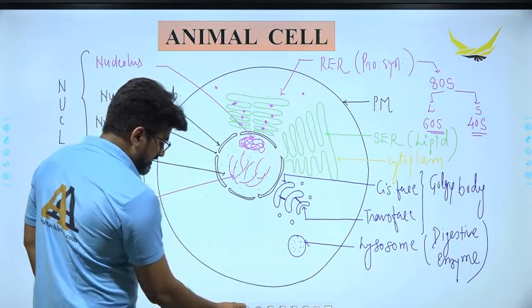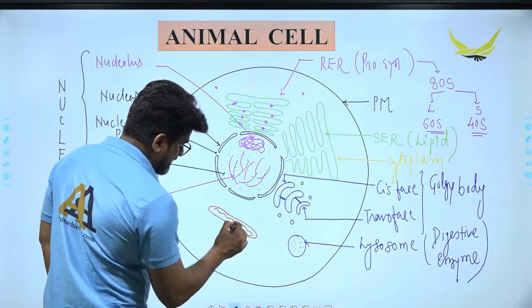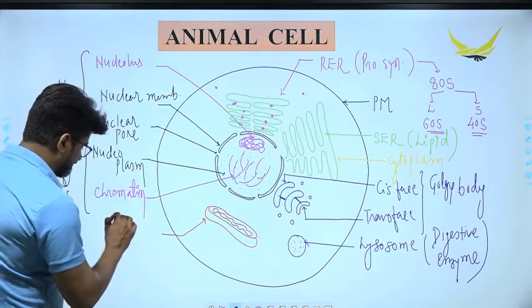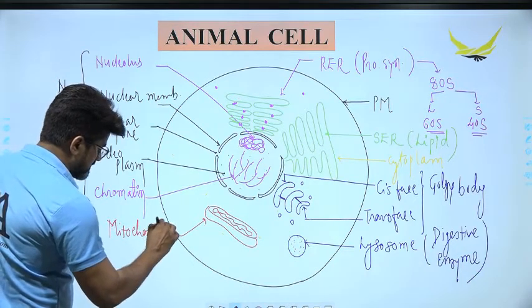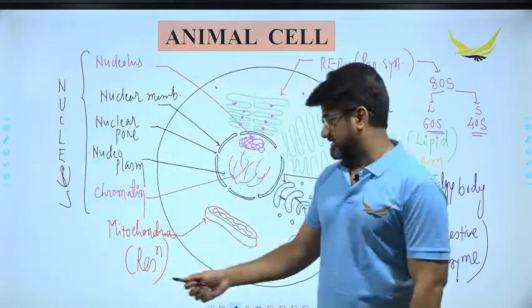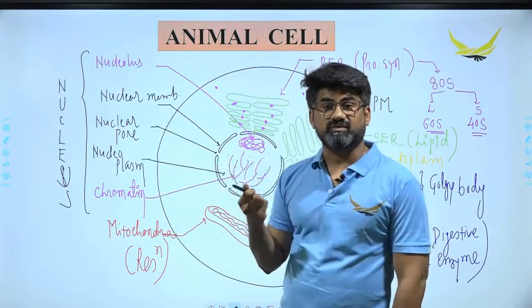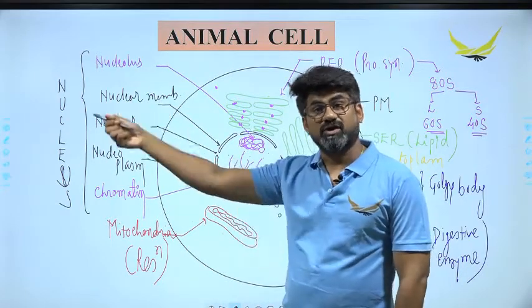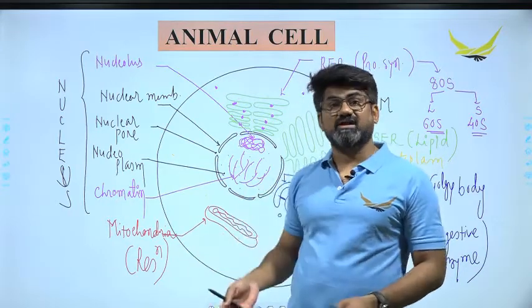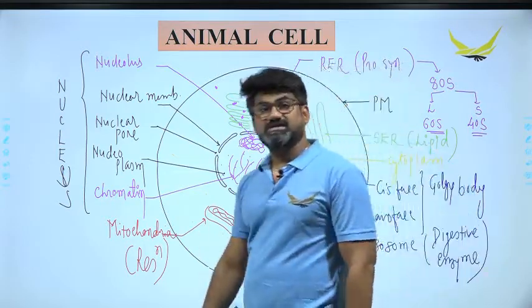Another important organelle is the mitochondria — a double membrane structure where the outer membrane is continuous and the inner membrane is folded. Mitochondria are related with cellular respiration and ATP synthesis. The mesosome in prokaryotic cells is analogous to the mitochondria in eukaryotic cells; both are concerned with cellular respiration and energy production for metabolic processes.